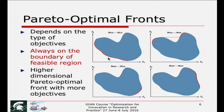For three objectives, you have a three-dimensional objective space, and some patch of the boundary surface becomes Pareto optimal depending on whether you are minimizing or maximizing each objective. You can extend this to any number of objectives — you get a higher-dimensional surface, and some patch of that surface is Pareto optimal. The algorithms we discuss start from a random region and move towards the Pareto front, providing a representative set of Pareto optimal solutions.